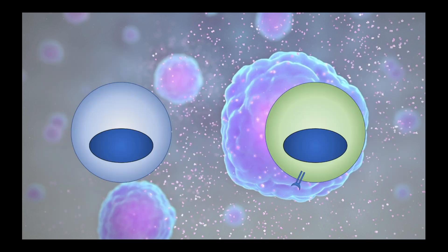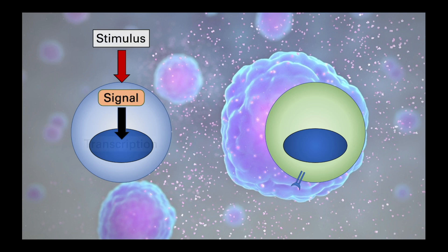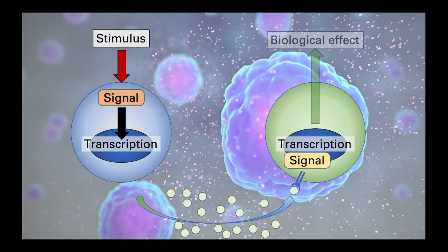Cytokines act in three ways. Once a cell receives the stimulus, it can initiate the signaling cascade that results in transcription factor activation and modified gene expression, which drives the production of cytokines. These then act on specific receptors, again modifying gene transcription and initiating an appropriate response in the target cell.